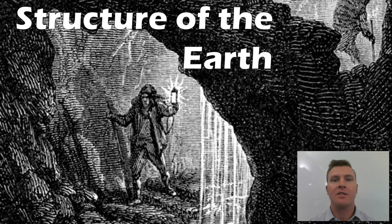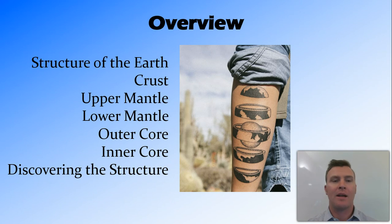Hi guys, in this video we're going to look at the structure of the earth. We're going to talk about some general things, then talk about the different layers of the earth, going from the top down: crust, the upper mantle, the lower mantle, the outer core, then the inner core, and then I'm going to talk briefly about how we worked out that the earth has these different layers.